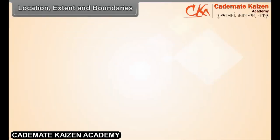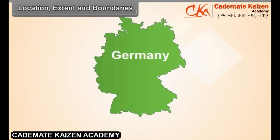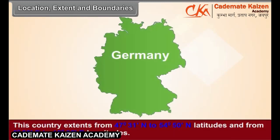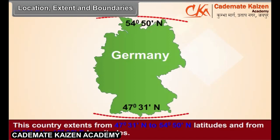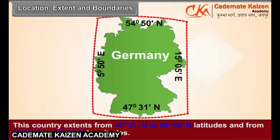Location, Extent, and Boundaries. This country extends from 47 degrees 31 seconds north to 54 degrees 50 seconds north latitudes and from 5 degrees 50 seconds east to 15 degrees 5 seconds east longitudes.